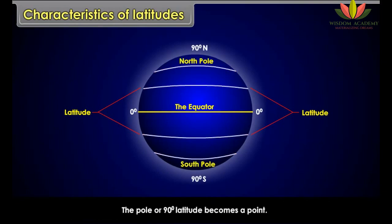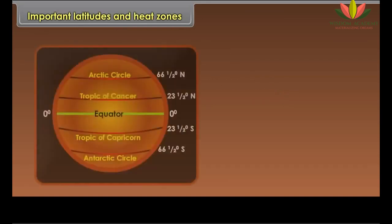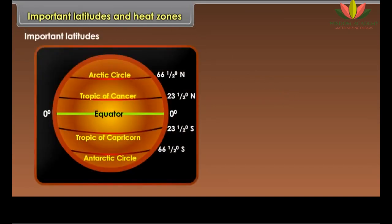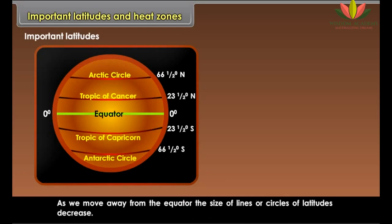Characteristics of Latitudes. The pole or 90-degree latitude becomes a point. They run in an east-west direction. They help in locating different objects on the ground and help in understanding the climate of a place. All the lines of latitudes are parallel to the equator, hence they are called parallels of latitudes. The equator is the longest parallel of latitudes. As we move away from the equator, the size of the circles of latitudes decreases.